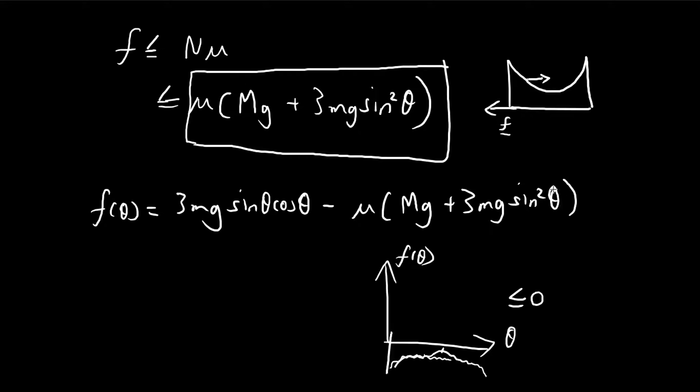So that means at a certain theta where this function is maximized, if this maximum is equal to zero, that means the friction is just enough to counteract the normal force. So that means this thing will never move, which is what we're looking for.